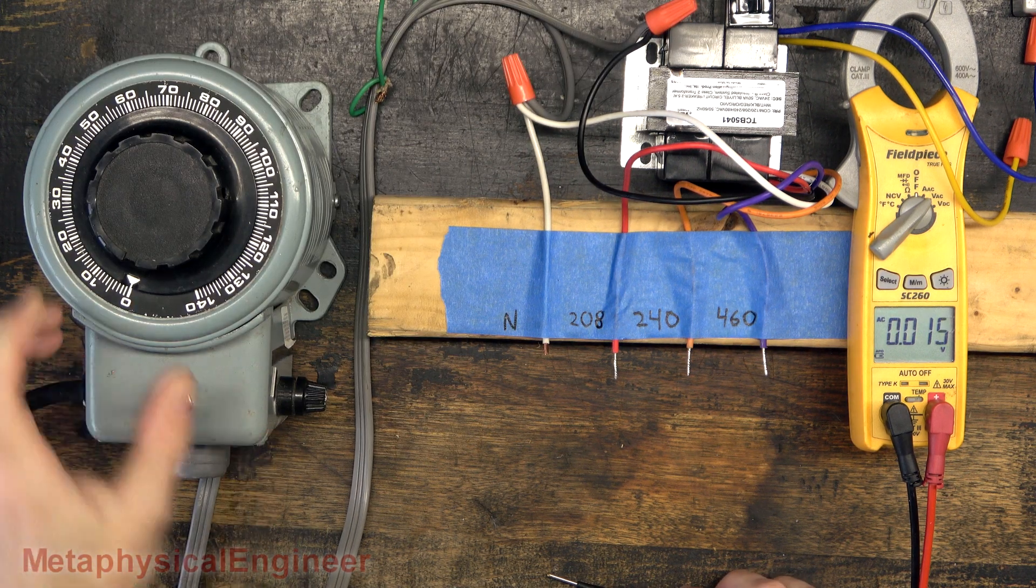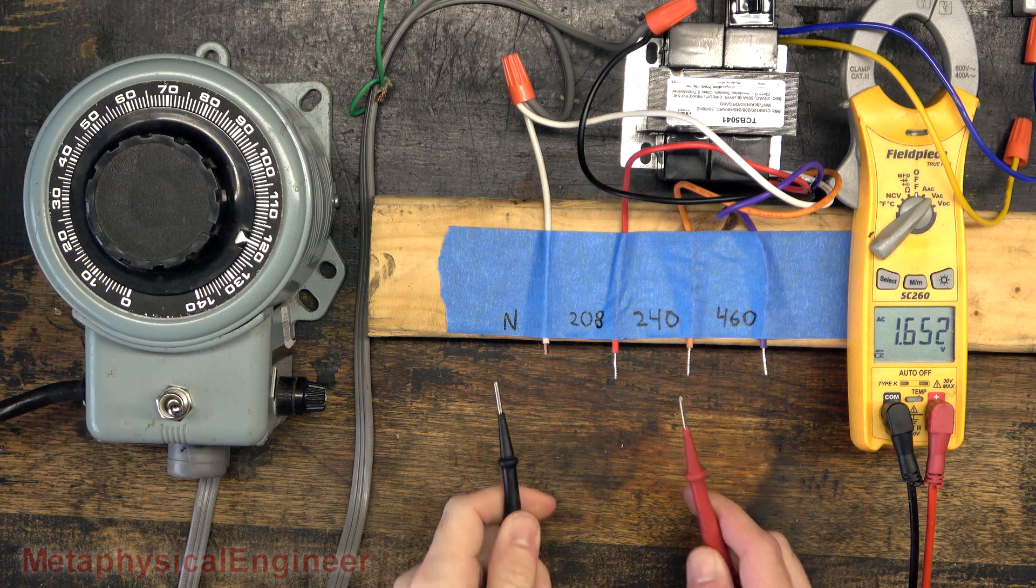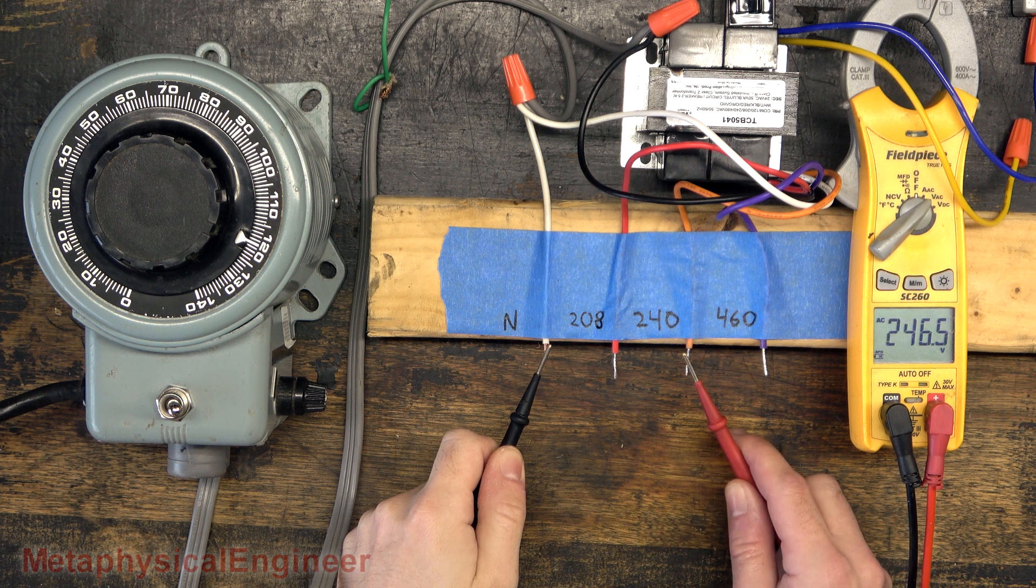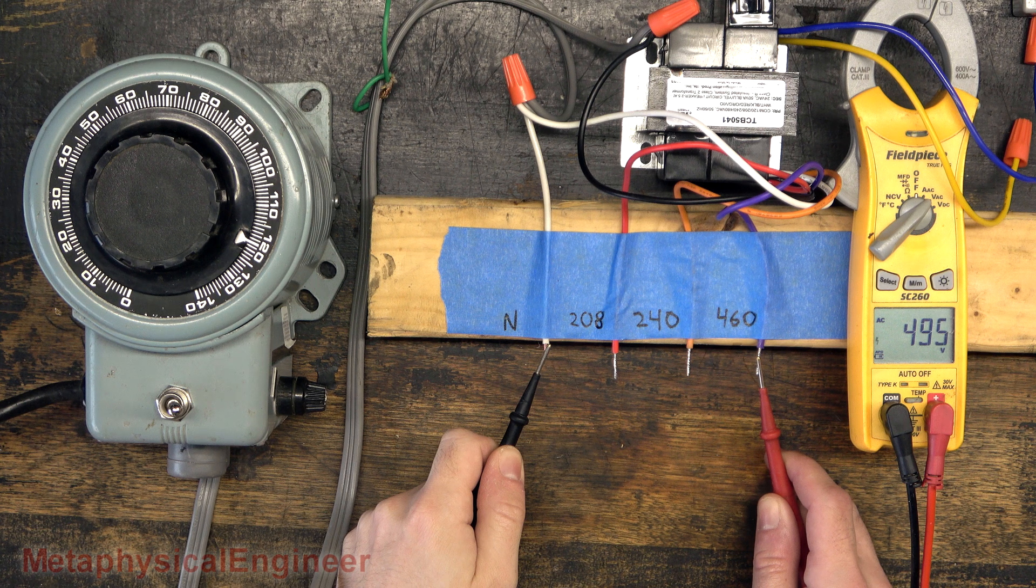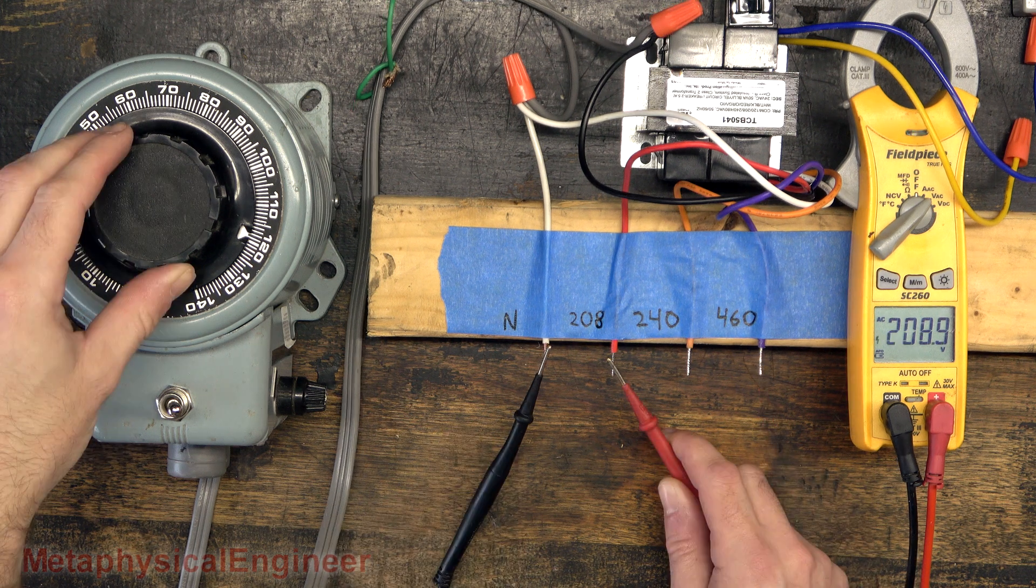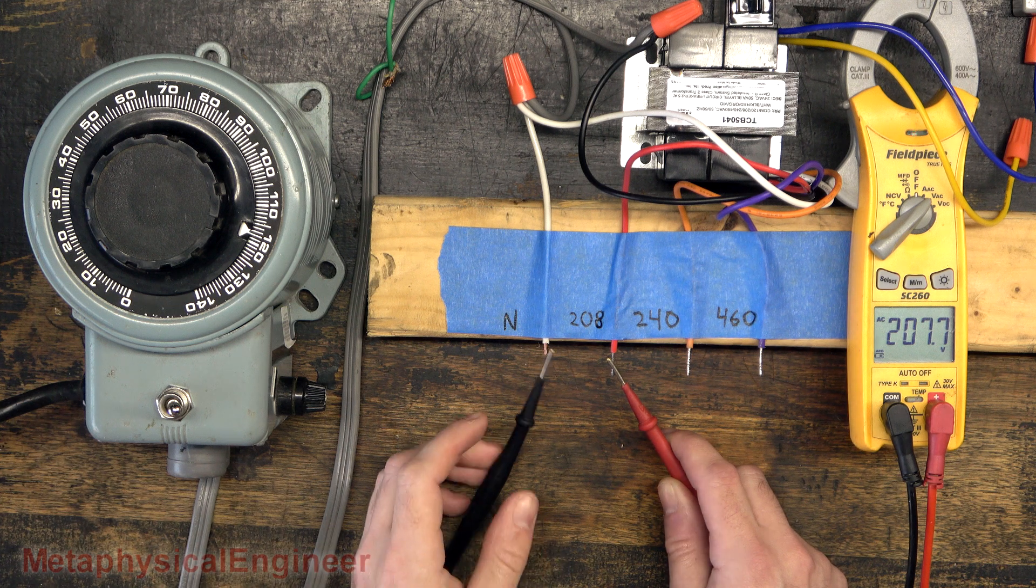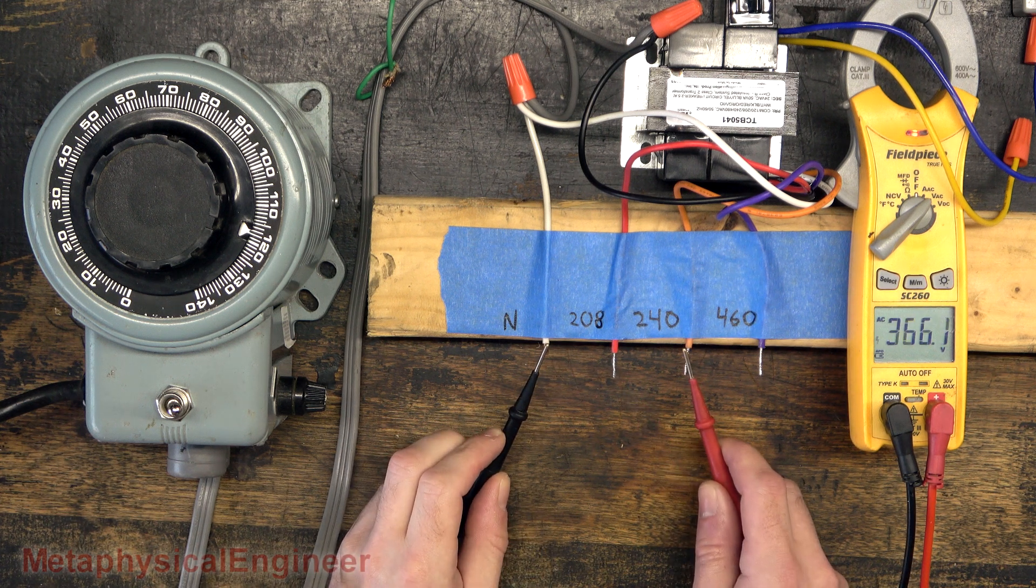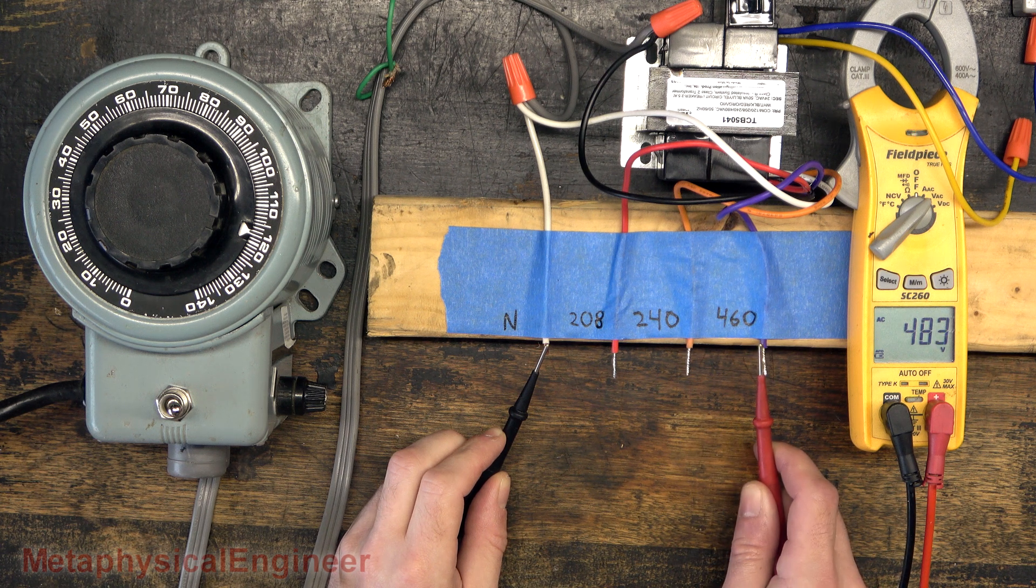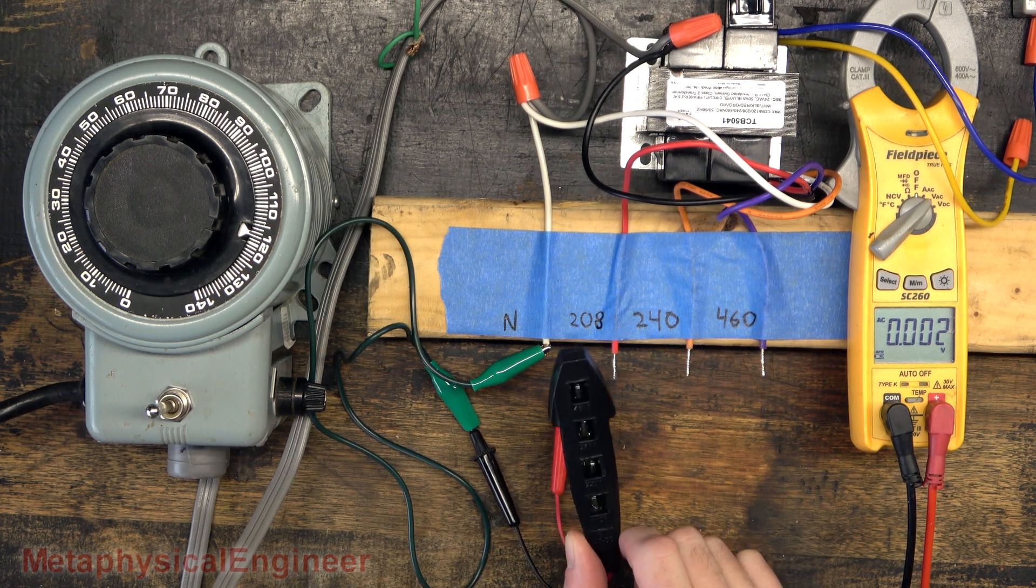If I start my variac here, set the line for about 120. A little bit high, but there's 208, 240, and 460. Actually quite high, 494. I will need to adjust these a bit. I'm going to back this down until it sits right about at 208. Test the other ones. 240, and the 460 is going to run a little bit hot at 483. Still within range. Now let's see what this thing does.